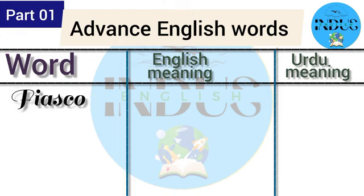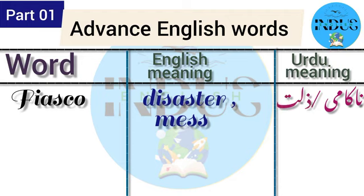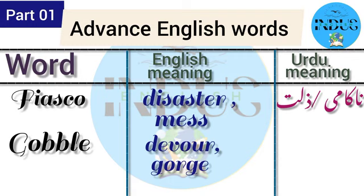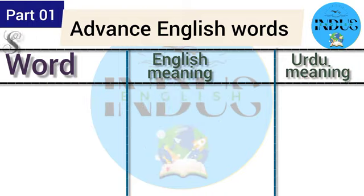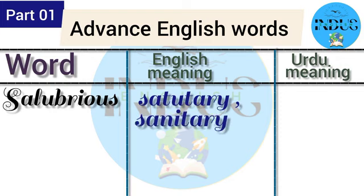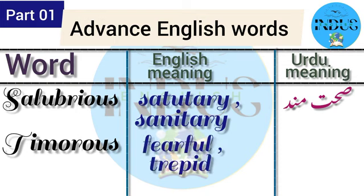'Fiasco' means disaster or mess. In Urdu, it means nakamiya zillat. 'Gobble' means devour or gorge. In Urdu, it means lap lap khaana. 'Salubrious' means salutatory or sanitary. In Urdu, it means sihat mand. 'Timorous' means fearful or tepid. In Urdu, it means darpok or busdil.